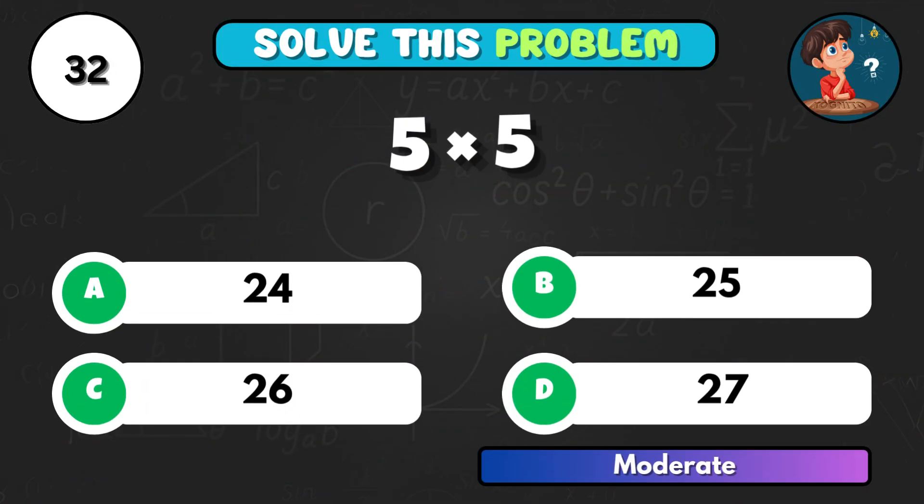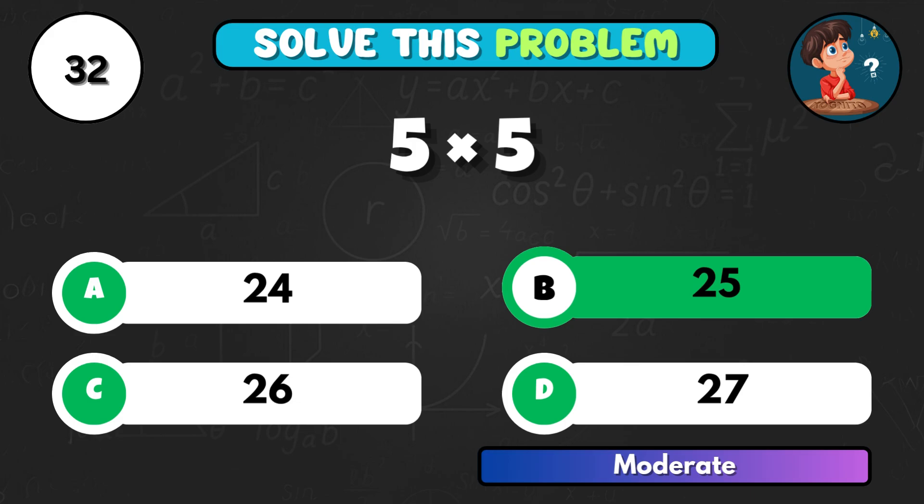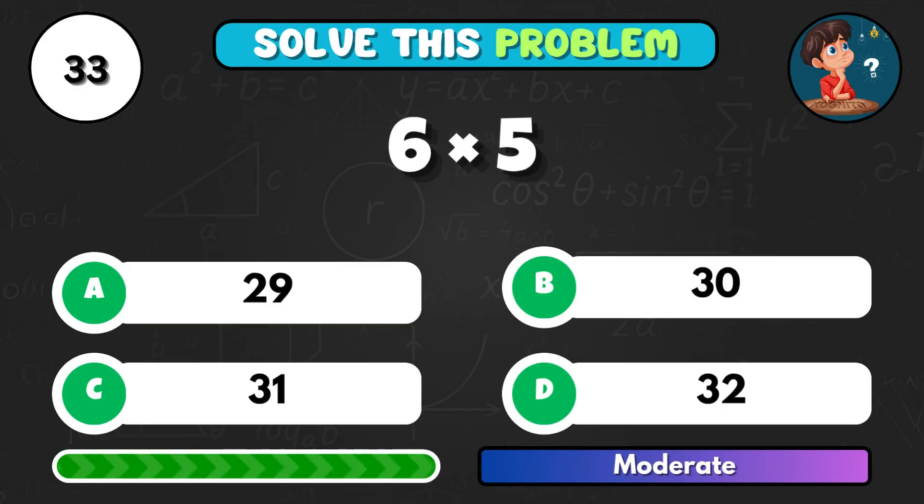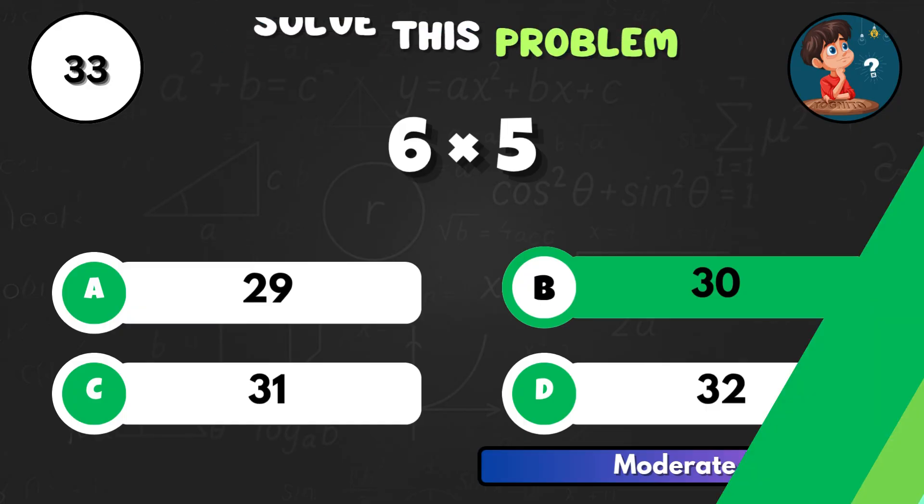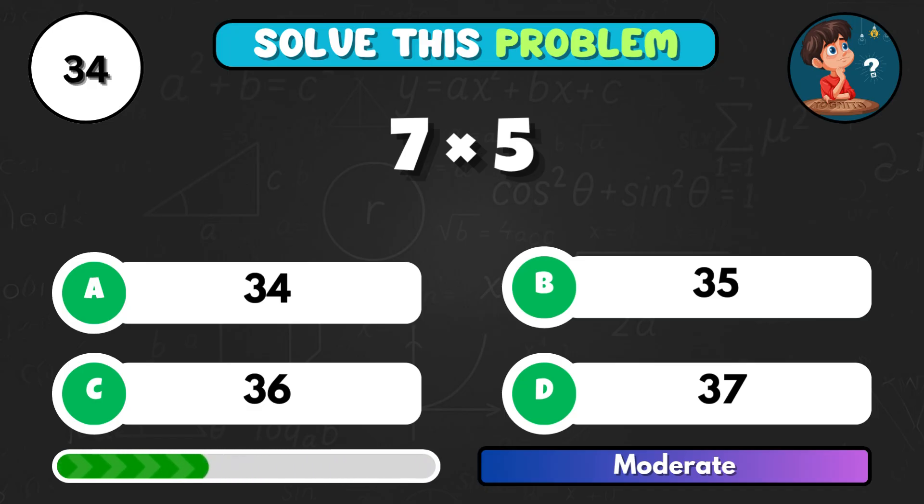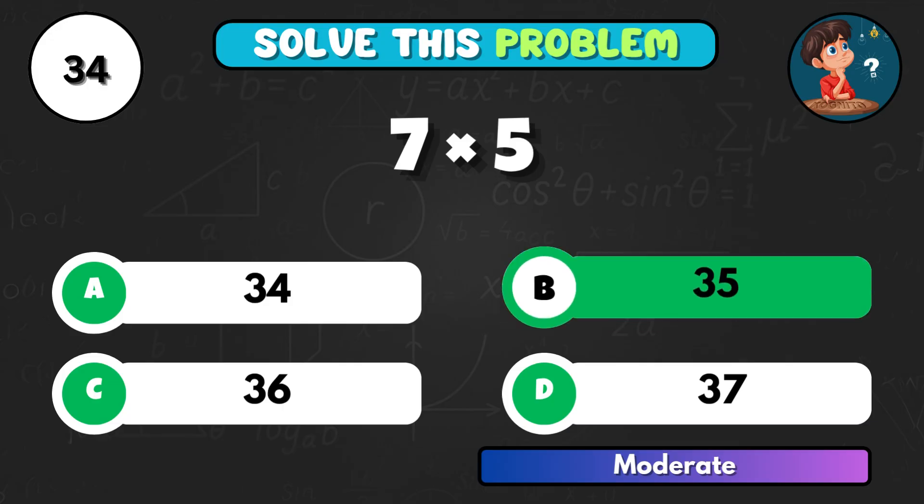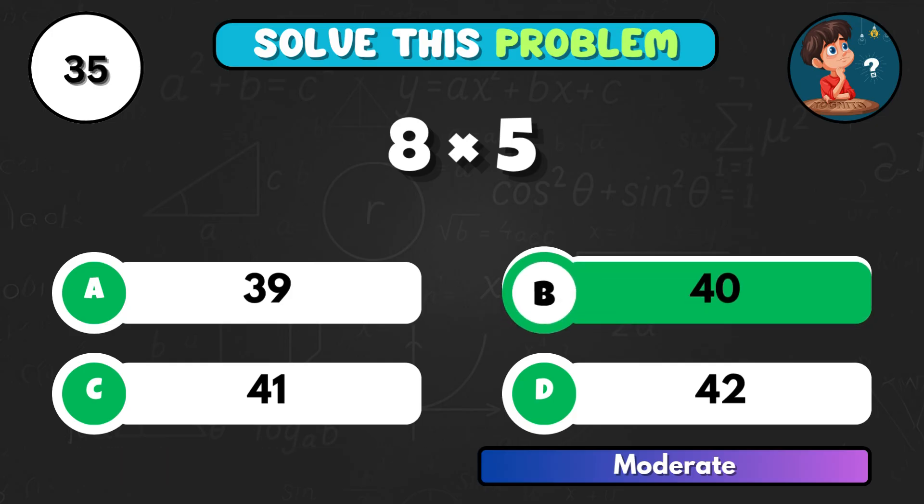Let's jump. 5 times 5. Answer is B, 25. 6 times 5. What's the total? That's B, 30. 7 times 5. Correct choice C, 35. 8 times 5. Do you know it? Answer is B, 40.